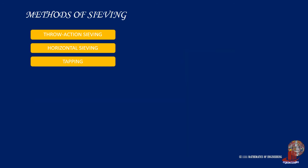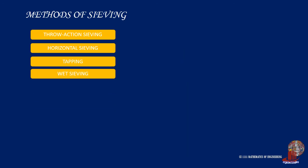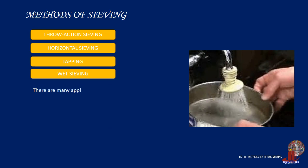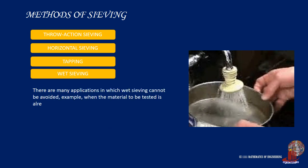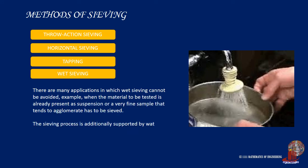Most sieve analyses are carried out dry, but some applications can only be carried out by wet sieving. This is the case when the sample must not be dried — for example, a suspension — or when the sample is a very fine powder that tends to agglomerate, mostly less than 45 micrometers. In a dry sieving process, this tendency would lead to clogging of the sieve meshes, making further sieving impossible.